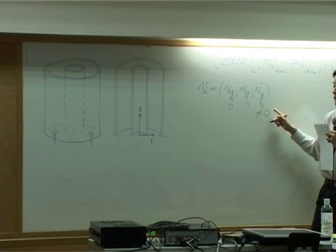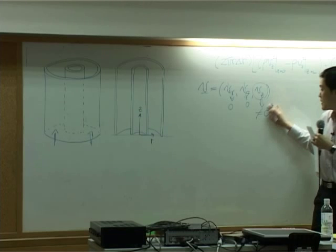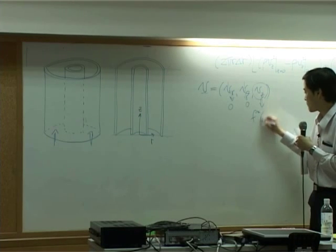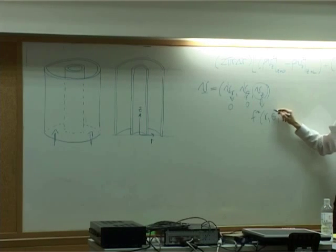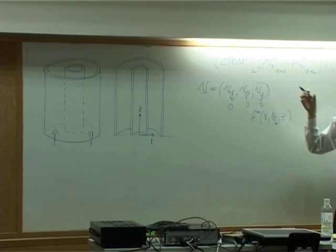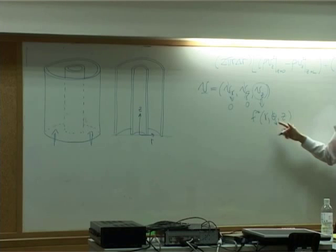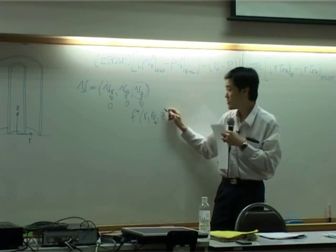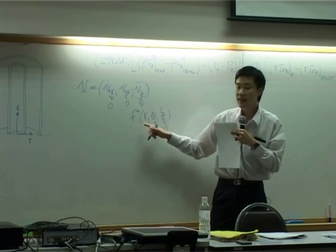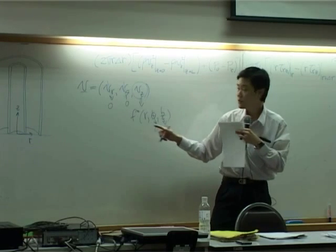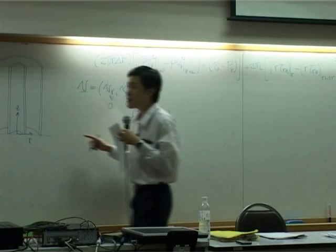We have vz only, and vz is function of what? r, theta, z. For sure it's not function of theta because the pipe is located right in the center. Is it function of z? No, because we neglect acceleration. So here this one would be dropped, 0, 0. It's a function of r. We can see clearly that the velocity in z direction is function of r simply because if you look into a plane where z is constant.